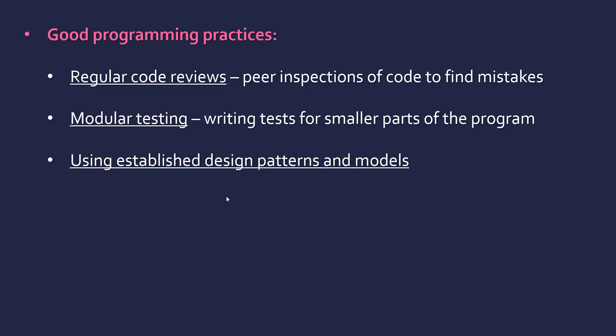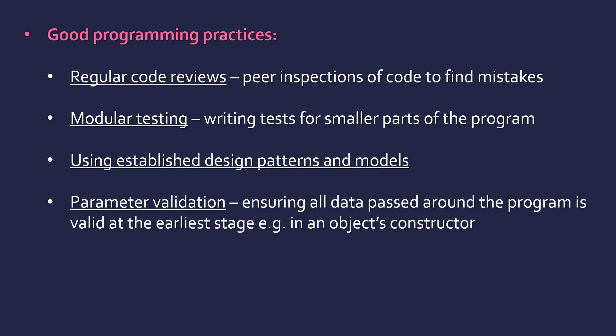If you're trying to do everything from scratch, you're more likely to make a mistake. Going back to validation — actually validating your parameters is important, making sure all the data passed around your program is valid and validated at the earliest possible stage. In object-oriented programming, the first method called is your constructor, and so you want to validate there, not in a future method.